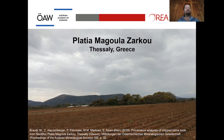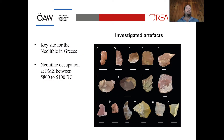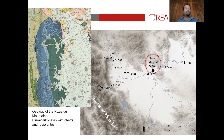I will now present two case studies. The first is Platia Magula Zarko in Thessaly, Greece — a key site for studying the Neolithic, with occupation lasting between 5800 and 5100 BC. The artifacts selected for our study are mainly radiolarites. To reconstruct the resource management and the sources used by the prehistoric inhabitants, we conducted geoarchaeological surveys. Based on the geological map, the most promising area for cherts and radiolarites is the Koziakas mountain range to the west of the site.